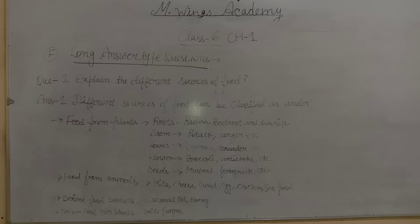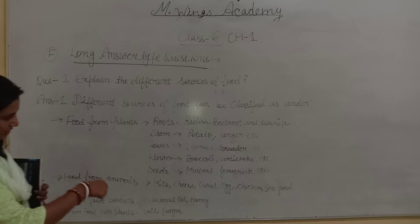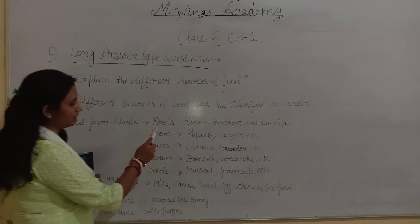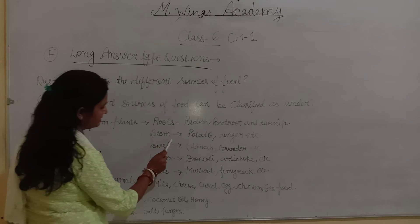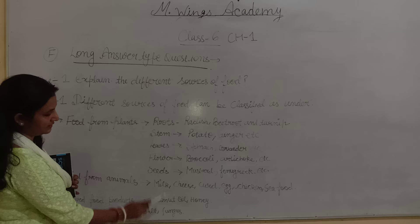First, food from plants. In food from plants, you will make subsections. You will write: roots, stems, leaves, flowers, seeds.